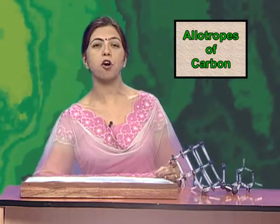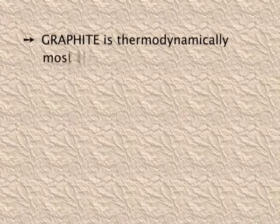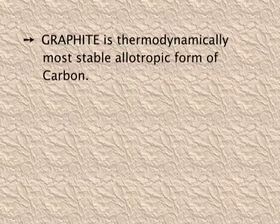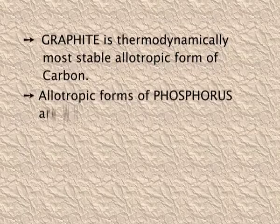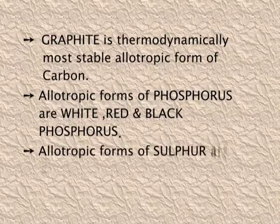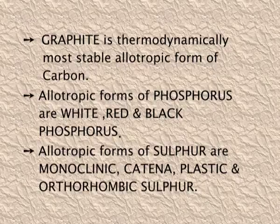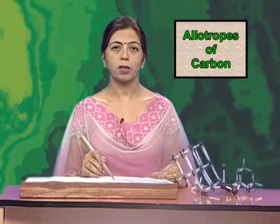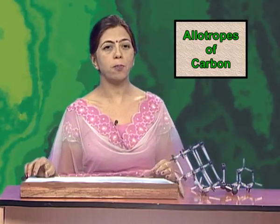Among all three crystalline forms of carbon, graphite is the thermodynamically most stable allotropic form. Other elements that show allotropy include phosphorus — with white, red, and black phosphorus as its allotropic forms — and sulfur, whose allotropic forms are monoclinic, catena, plastic, and orthorhombic sulfur. Now I'll give you a quick recapitulation via PowerPoint presentation.